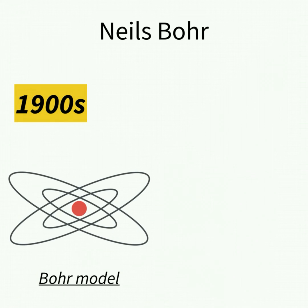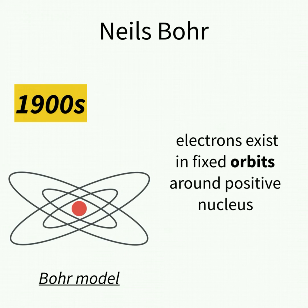Then Niels Bohr came up with a Bohr model. In this model, he postulated that electrons exist in fixed orbits around a positive nucleus.